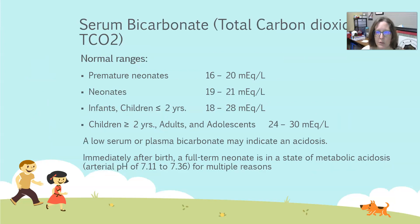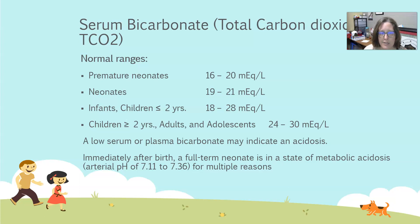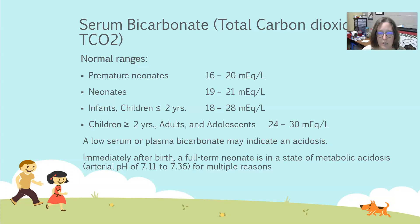Lastly, we have the serum bicarb, also known as total carbon dioxide or TCO2. A normal range for a premature neonate is 16 to 20 milliequivalents per liter — lower than in adults. In neonates, it climbs up a little to 19 to 21 milliequivalents per liter. In infants and children less than two years, it's 18 to 28 milliequivalents per liter. In children greater than two years, adolescents, and adults, it's 24 to 30 milliequivalents per liter.